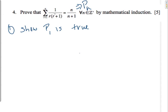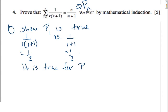So that means my n value is 1. So I'm going from r equals 1 to 1. So I'm just going to have the first term, which is 1 over 1 plus 1, which is equal to 1 over 2. The other side of the equation, the right-hand side, is 1 over 1 plus 1, which is a half. So it is true for P1.